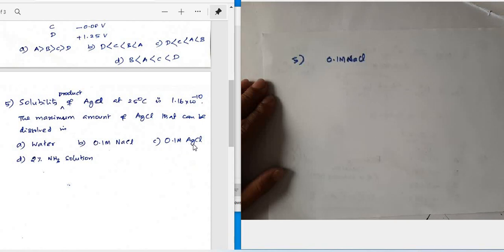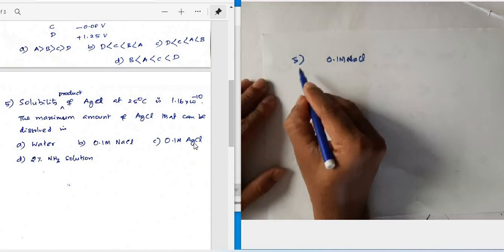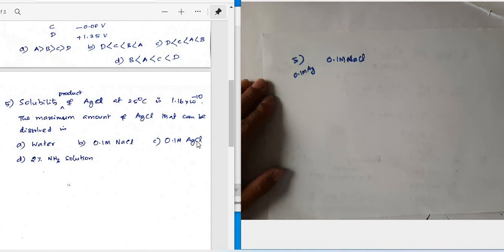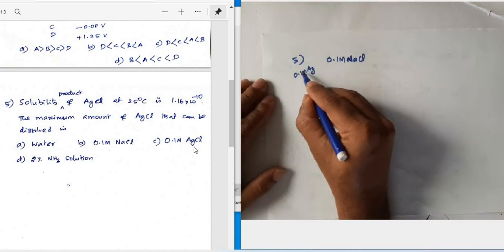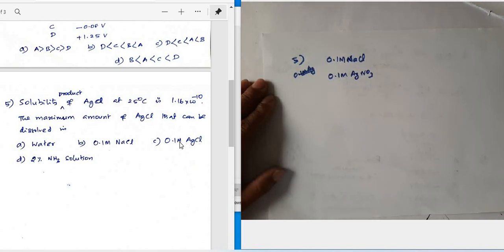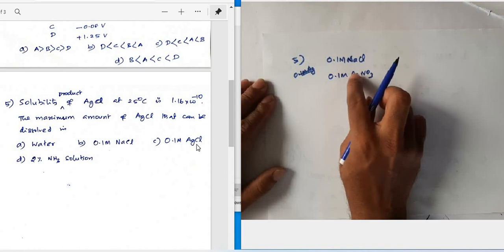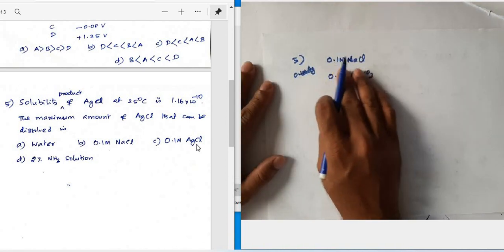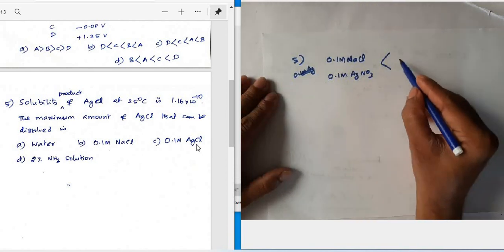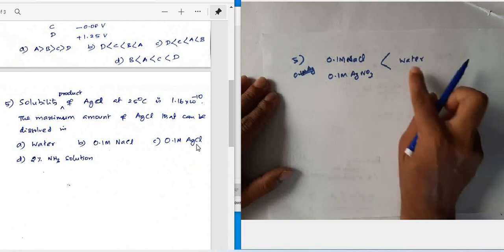In 0.1 M silver nitrate (option C), there is also a common ion (Ag⁺), so common ion effect further suppresses solubility. In pure water, solubility is higher than in either of these solutions. However, in ammonia solution (option D), silver chloride reacts with ammonia to form a diamine silver complex.